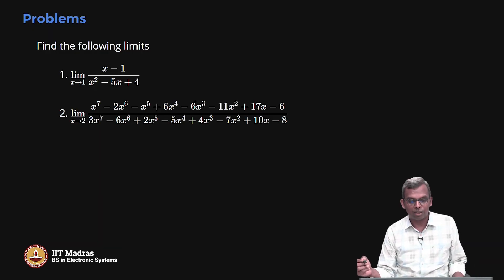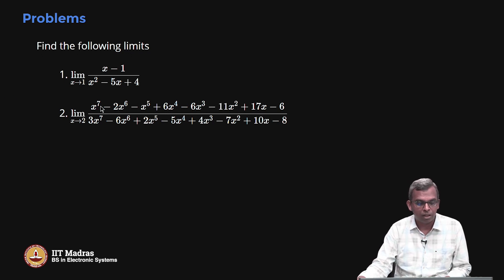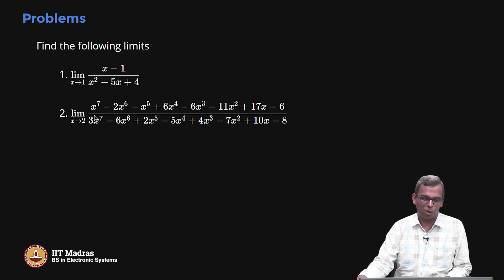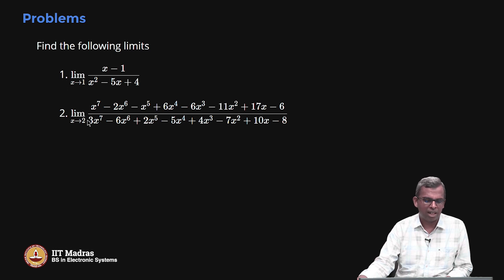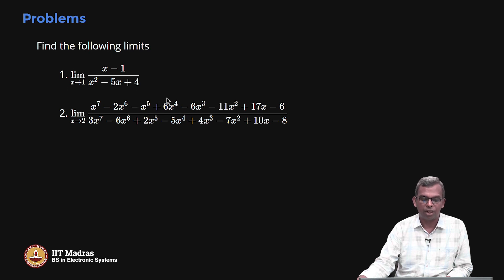The next problem is really where the power of this rule is more apparent. The numerator is a big 7th degree polynomial and the denominator is another big 7th degree polynomial. You can substitute x equals 2 and find that the numerator and denominator both go to 0 — it takes a little calculation but it is not very hard to check. Because it is 0 by 0, you can take the derivative and simply substitute to get the answer. I will leave this as an exercise. You differentiate and you will see that in the numerator and denominator you will probably get non-zero values, and you can substitute to get the answer. L'Hôpital's Rule is very useful even for such ugly-looking expressions.